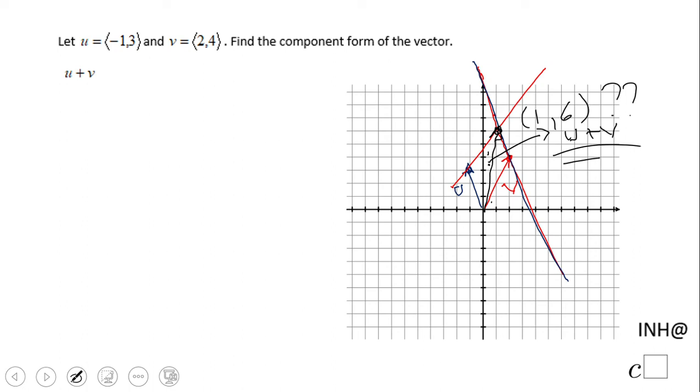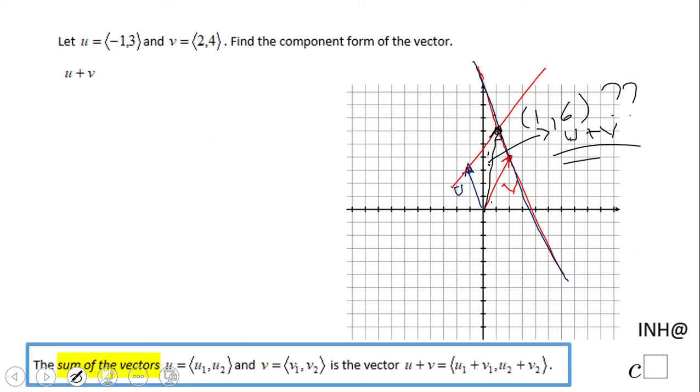Let me show you now the algebraic way. I want you to take a look - it's nothing else than adding the components. So if we have u which is negative one and three, and v which is two and four...